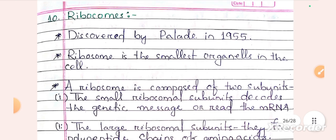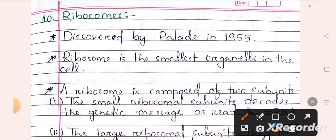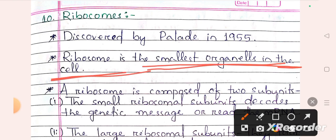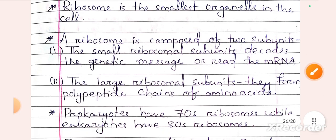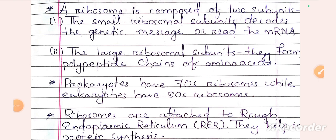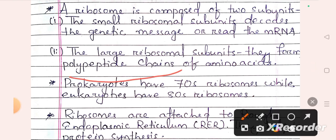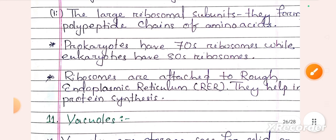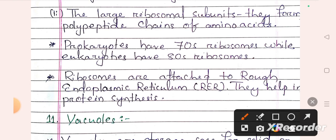The ribosome is the smallest organelle in the cell, composed of two subunits. The small ribosome subunit decodes the genetic message and reads mRNA (messenger RNA). The large ribosome subunit helps form polypeptide chains. Prokaryotic cells have 70S ribosomes and eukaryotic cells have 80S ribosomes — 'S' is the unit of sedimentation. Ribosomes are attached to the rough endoplasmic reticulum and help in protein synthesis.